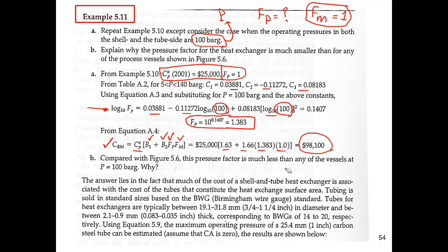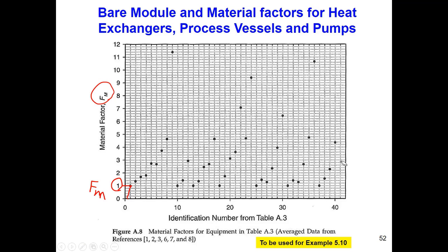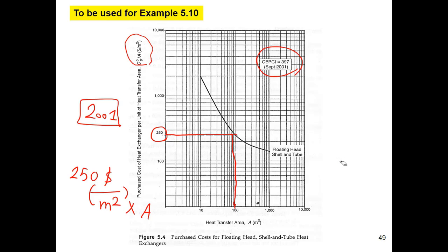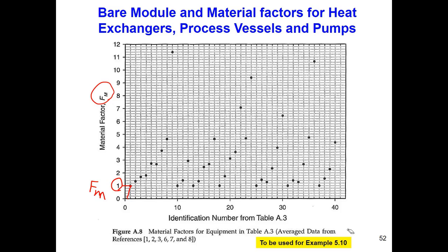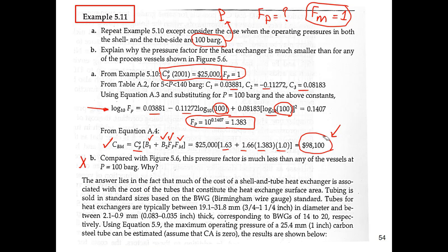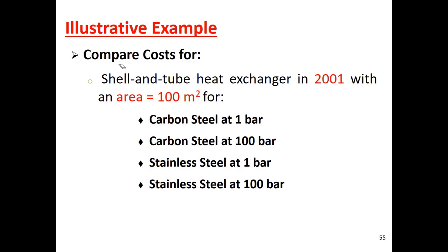Comparing with the previous result: at 1 bar we found a total price of $82,000, and now at 100 bar it's $98,000 — almost $16,000 more — because the higher pressure requires more material and more testing. Part B is out of the scope of this unit so we can skip it. We are almost done with this part, and here is one additional comparison example.